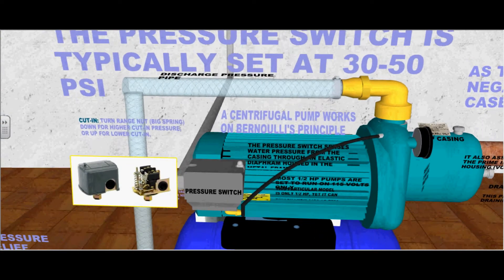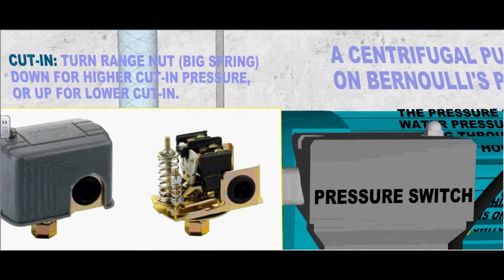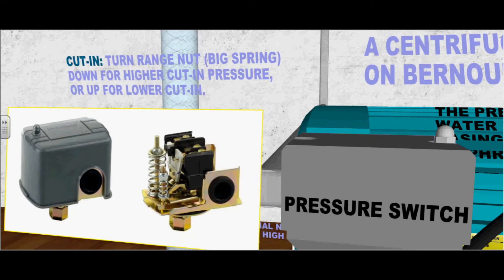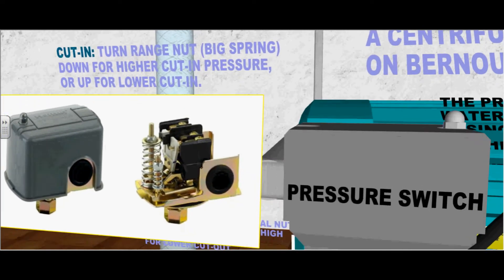This pressure switch is typically set at 30 to 50 psi. Turn the range nut or the big spring down for a higher cut-in pressure or up for lower cut-in pressure.